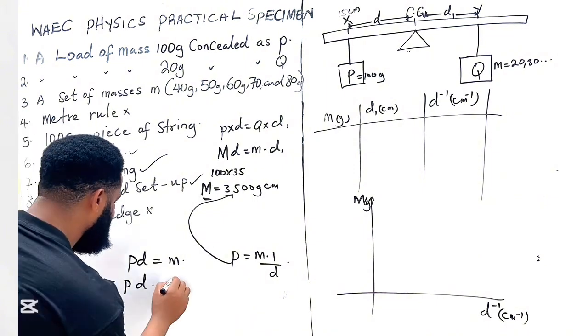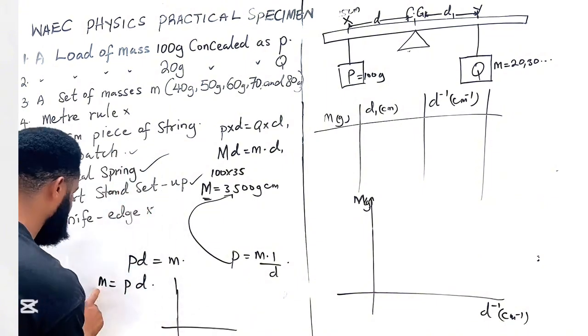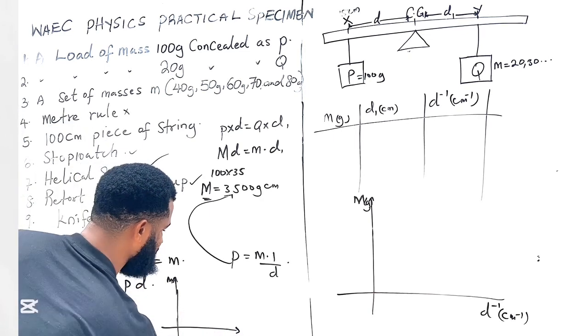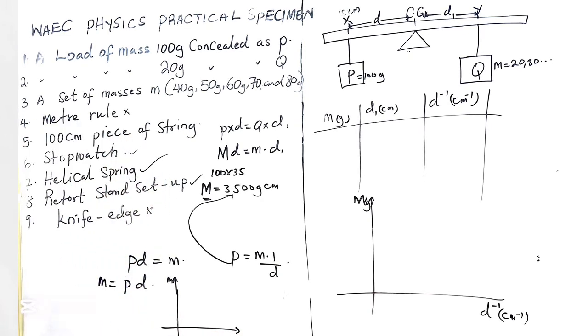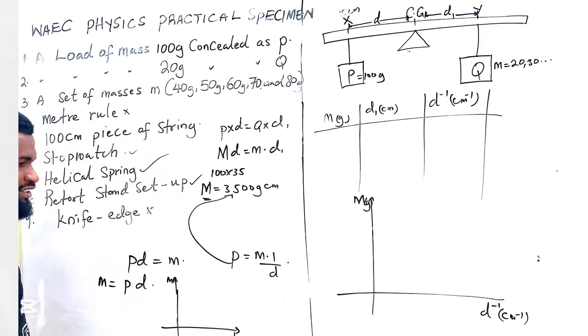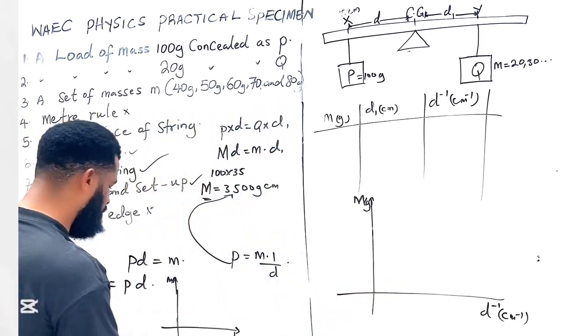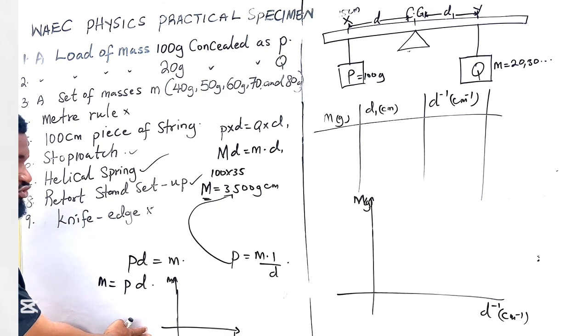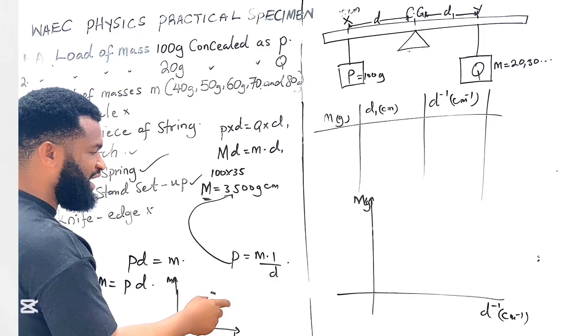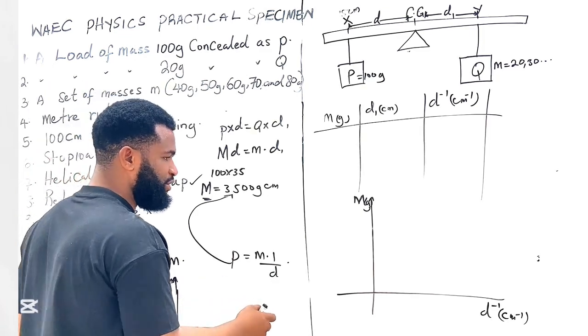Now where m is on the vertical and d inverse is on the horizontal. This graph is almost the same thing as this graph, such that with this P now you are now going to find, because